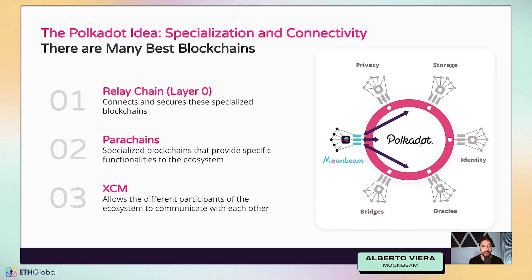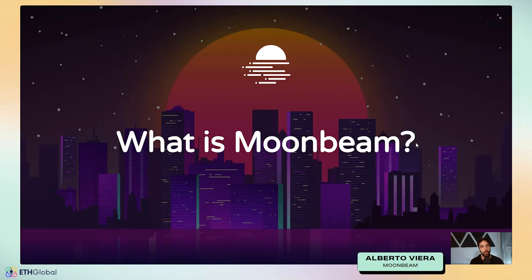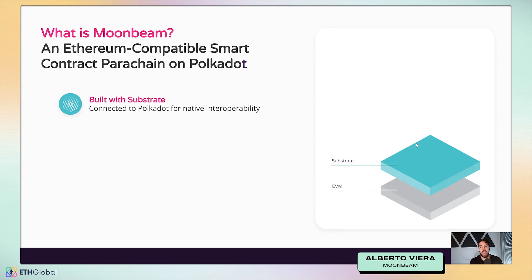Now that we've talked about Polkadot, let's talk about Moonbeam. First, Moonbeam is a parachain on Polkadot. The main added value we bring to the ecosystem is that it's an Ethereum-compatible smart contract platform. Polkadot itself doesn't allow you to build smart contracts directly — it relies on parachains like Moonbeam to offer this functionality for the ecosystem as a whole.